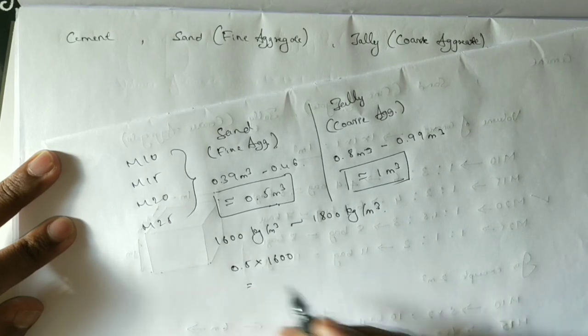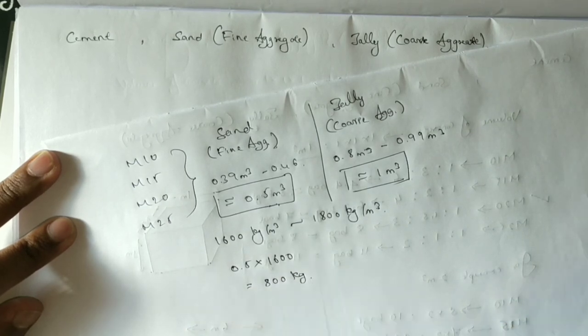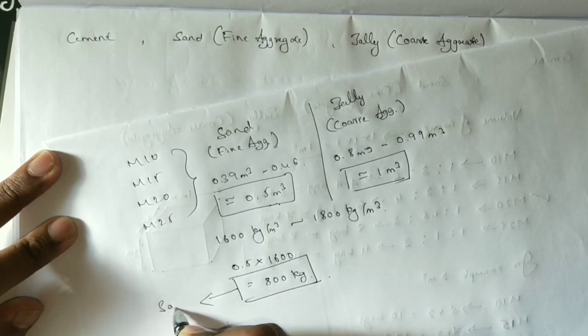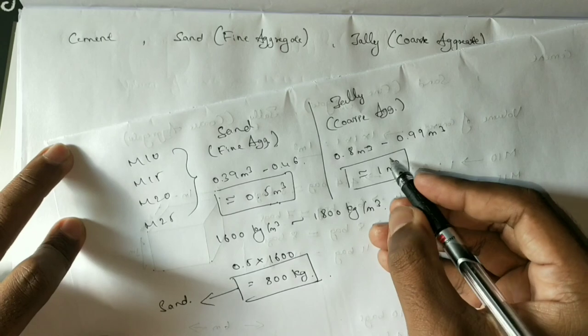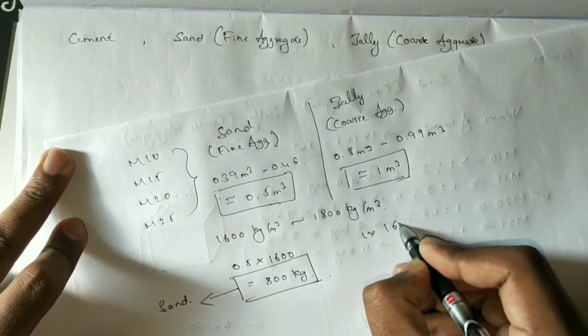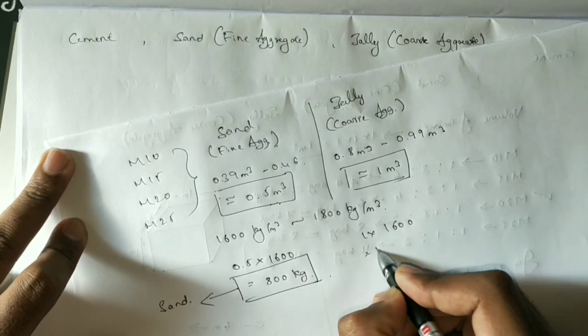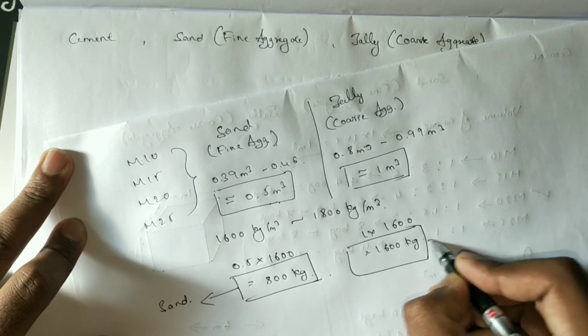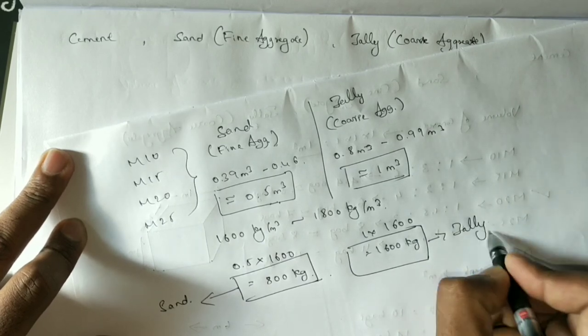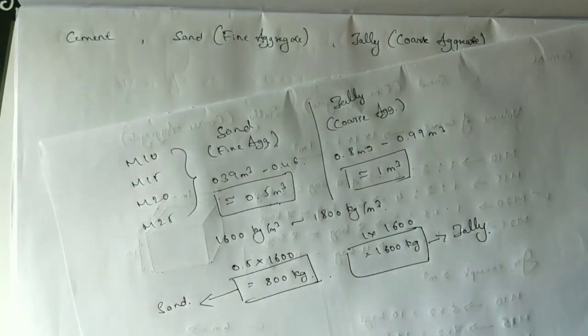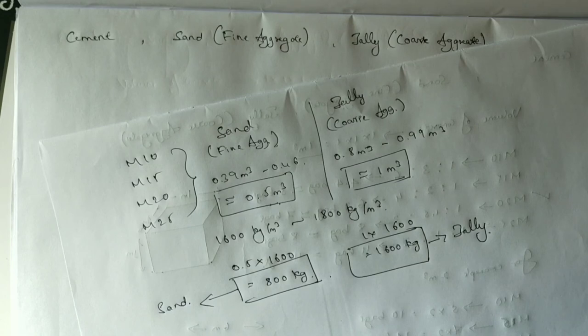The density of aggregate is almost 1,600 to 1,800 kg per cubic meter. So for 1 cubic meter of jelly at 1,600 kg, and 0.5 cubic meters of sand at 1,800 kg density equals 900 kg of sand. This way you can easily calculate cement, sand, and jelly quantities.